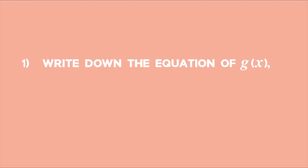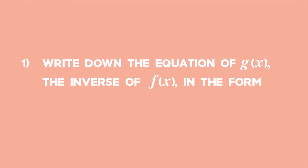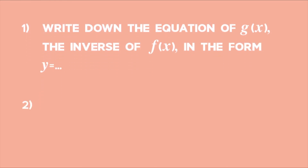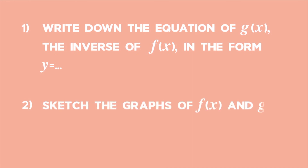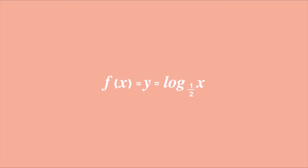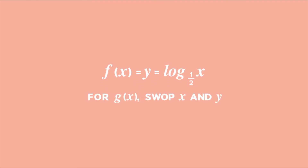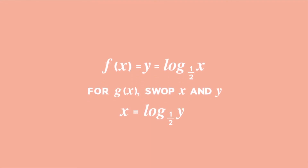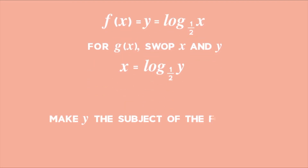Let's work through this example. If f of x equals log base one half of x: number one, write down the equation of g of x — the inverse of f of x — in the form y equals. To find the inverse of y equals log base one half of x, swap x and y: x equals log base one half of y. Convert to exponential form to make y the subject: y equals one half to the power of x.